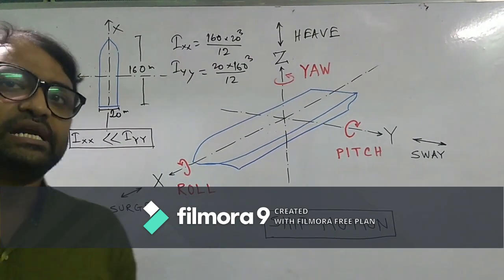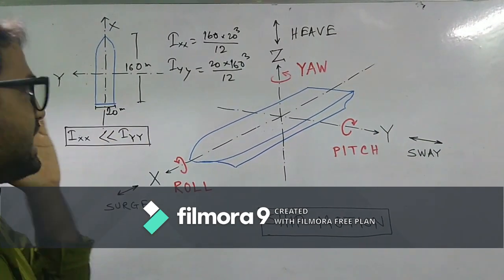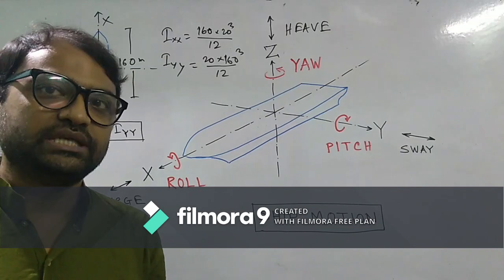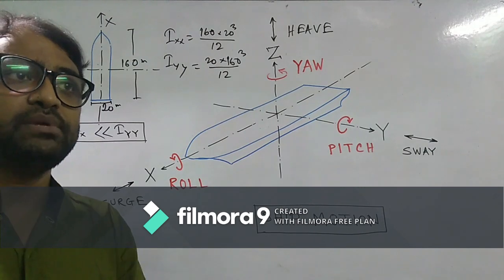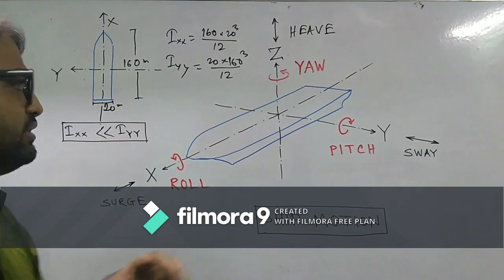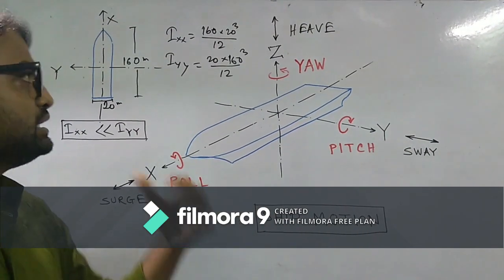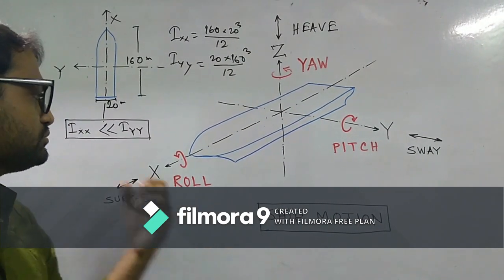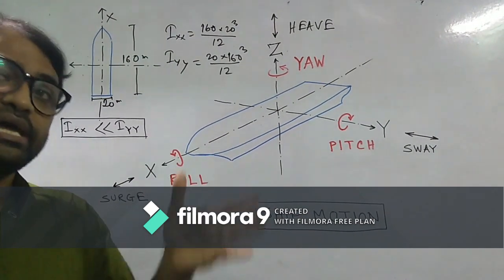So this moment of inertia is somehow related to the stability. For any particular axis, if the moment of inertia is much lesser, then we can expect the stability of that particular body, it may be a rigid body or floating body, the body or object should have very lesser stability about that particular axis. In our case, the moment of inertia about x axis is much lesser. That is why we are getting much lesser amount of stability about the x axis.